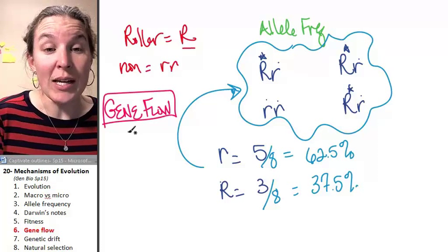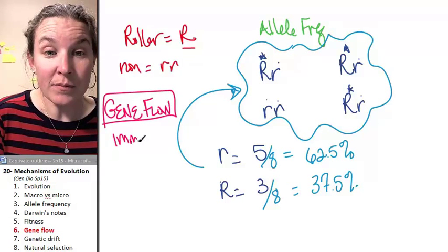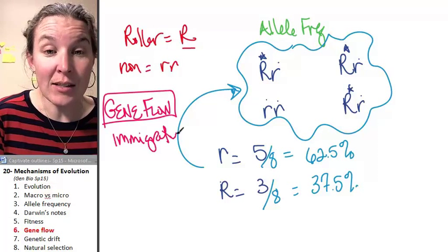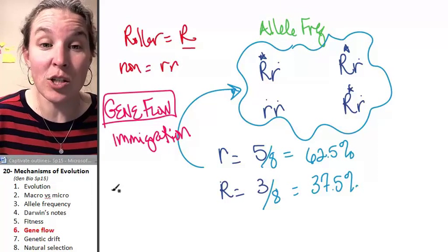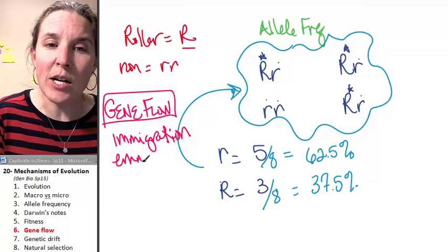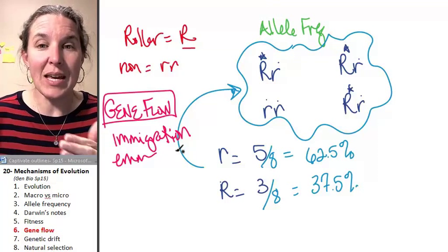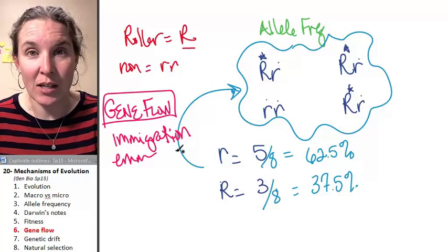Gene flow is immigration—that's new people coming into the population—or emigration, existing people in the population leaving.